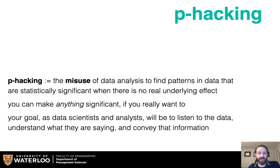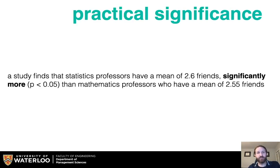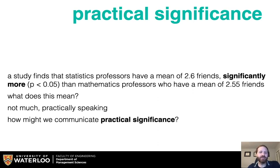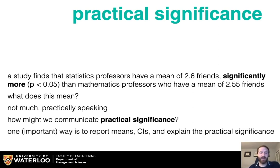Your goal as data scientists, analysts, and researchers will be to listen to the data, understand what they're saying, and convey that information. It's really important to have a notion of practical significance. A study finds that statistics professors have a mean of 2.6 friends — significantly more (p < 0.05) — than mathematics professors who have a mean of 2.55. Practically speaking, the difference between 2.6 and 2.55 friends means they're both basically not having a lot of friends. One important way to communicate practical significance is to report means and confidence intervals, give the actual values, and interpret whether a difference of 0.05 friends actually makes a difference.